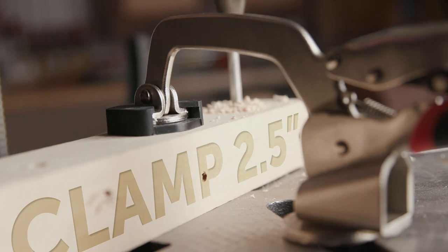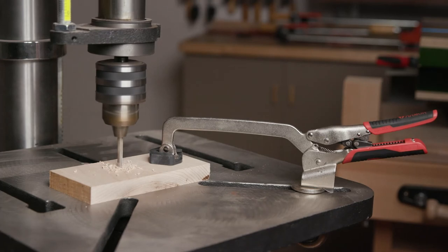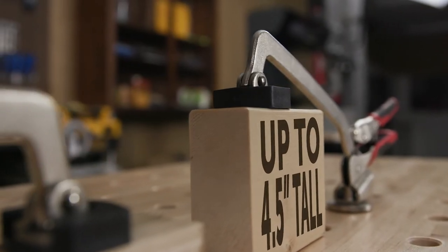The 6 inch drill press clamp has a 6 inch reach and can clamp pieces up to 4.5 inches in height with up to 250 pounds of tip pressure.